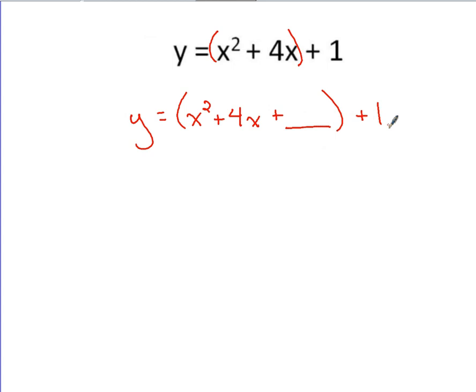If you complete the square with what you have there inside parentheses, taking half of 4 which is 2, we're squaring 2 which is 4, we're adding on 4.